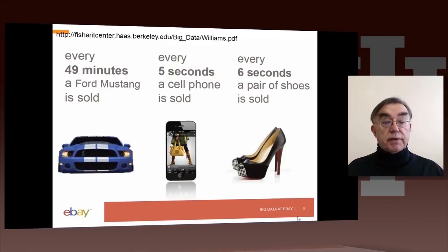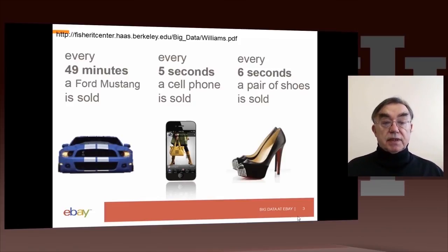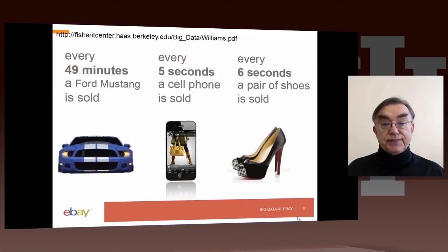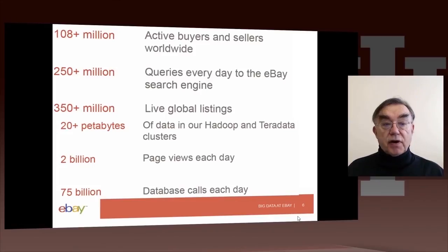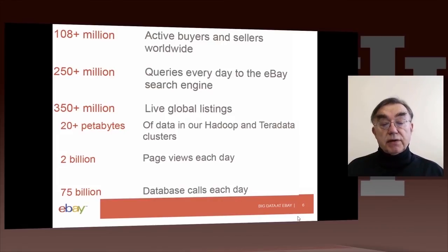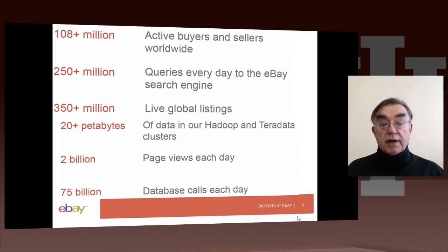Now we come to a set of slides from a talk by Williams from eBay. The first slide states what eBay does: sells Mustangs every 49 minutes, cell phones every 5 seconds, and shoes every 6 seconds. Here are some statistics on the actual volumes of activity at eBay: 108 million active buyers and sellers worldwide, 250 million queries to their search engine, 350 million live global listings, 20 petabytes of data, and they use a mix of Hadoop — which is MapReduce — and more traditional database solutions using Teradata. They also have 2 billion page views every day and 75 billion database calls every day.